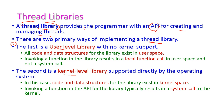In the user-level library, the thread is created at the user level and there is no kernel support. All the code and data structures of the thread exist only in user space. If we call the thread, it results only in a local function call and there is no system call, because there is no involvement of the kernel in the user-level library.